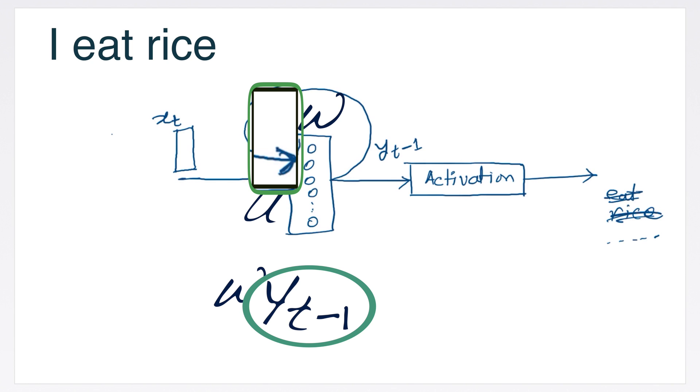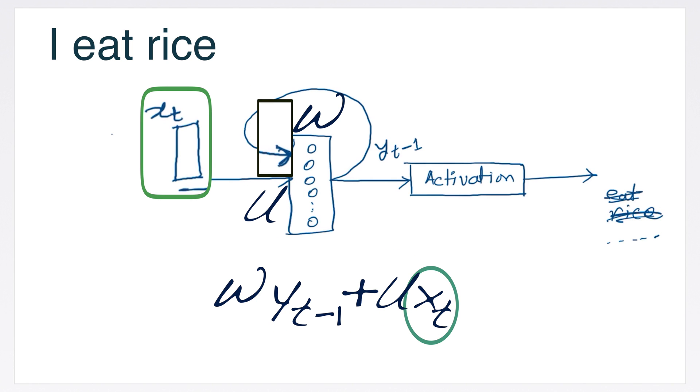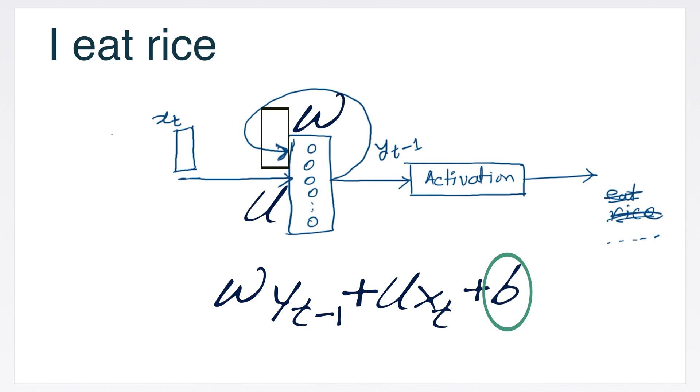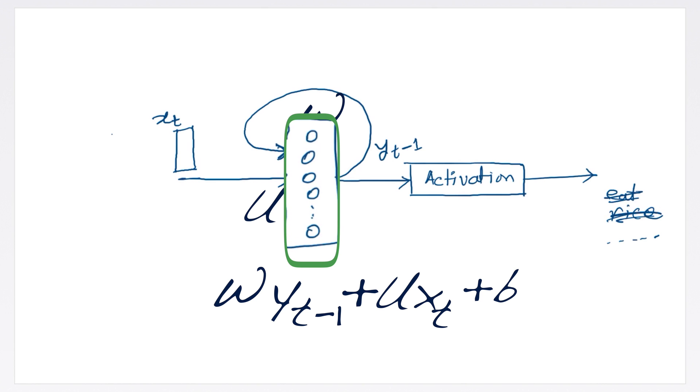W times previous hidden state is added with U times input word vector, and it is added with the bias term B. The length of the bias term B in an RNN is equal to the number of neurons in the hidden layer. During training, the network learns the optimal values for the weights W, U, and B.